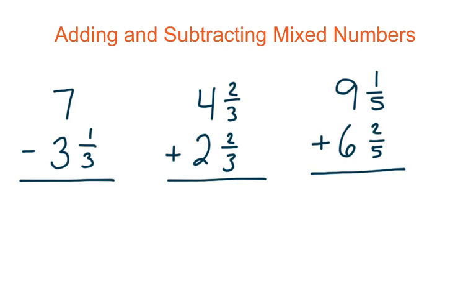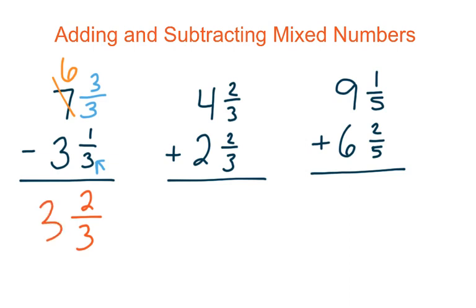Next problem: 7 minus 3 and 1 third. To solve this we have to borrow from our whole again, so the whole becomes 6. I look at the fraction below to identify what one whole equals — in this case it's 3 thirds. Now I can subtract: 3 thirds minus 1 third gives me 2 thirds, and 6 minus 3 gives me 3. That is my final answer.